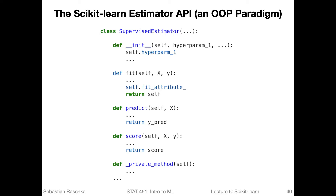Here's an overview of the scikit-learn estimator API — the API for regressors, like regression analysis, and classifiers. We call them in scikit-learn regressors and classifiers, and these are the main types of classes for supervised learning.